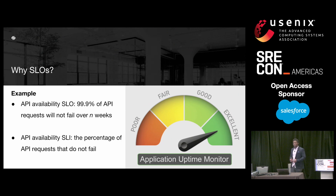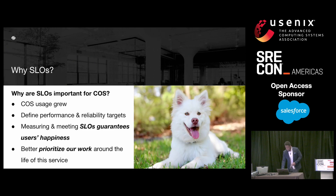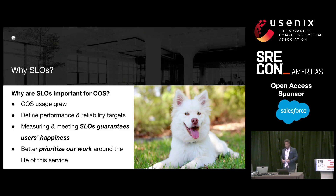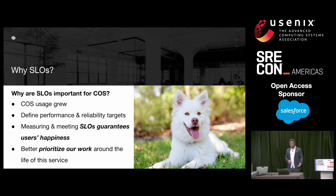In other words, the success rate of all API requests. It is important to note that SLIs are the metrics that drive SLOs, the reliability targets. So the reason why SLOs were important for our object storage service is that a bit after we launched our service, a number of production systems and internal apps began using it. At that point, it became important for us to know how reliable our service was for our users. So we decided to define measurable, optimal performance and reliability targets for our service and meet them. Measuring and meeting these SLOs was a way for us to guarantee our users' happiness, and this also allowed us to better prioritize our work around the life of this service in production.